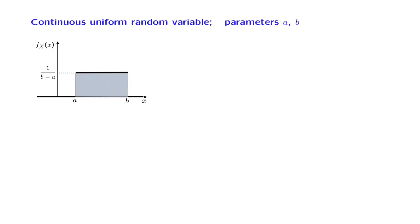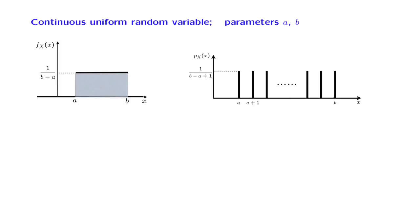As an example of a mean variance calculation, we will now consider the continuous uniform random variable, which we have introduced a little earlier. This is the continuous analog of the discrete uniform, for which we have already seen formulas for the corresponding mean and variance.